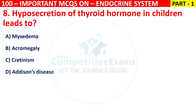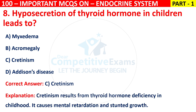The right answer is C, that is cretinism. Cretinism results from thyroid hormone deficiency in childhood. It causes mental retardation and stunted growth.